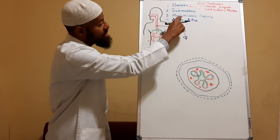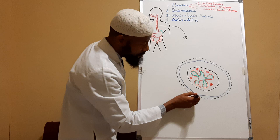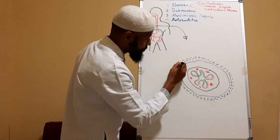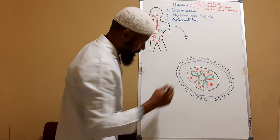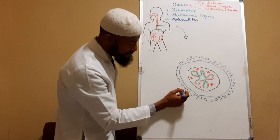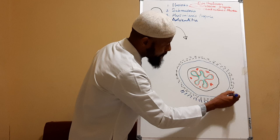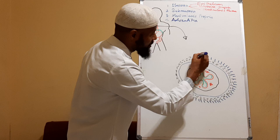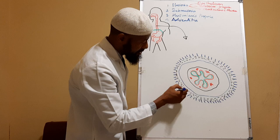The muscularis propria is comprised of circular muscles — a layer of circular muscles — and then another layer of longitudinal muscles. These are the layers of longitudinal muscles. Finally we have an outer covering.